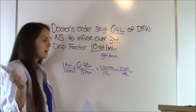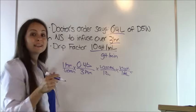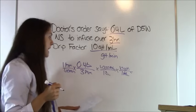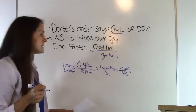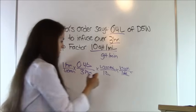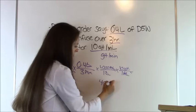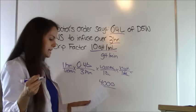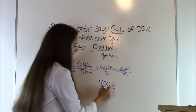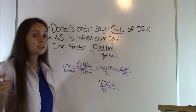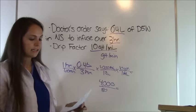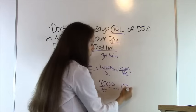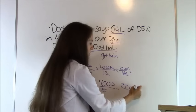Multiply everything at the top: 1 times 0.4 times 1,000 times 10 equals 4,000. Multiply the bottom: 60 times 3 times 1 times 1 equals 180. 4,000 divided by 180 equals 22.222 repeating, so our answer is 22 drops per minute.